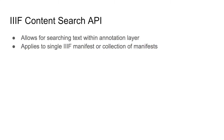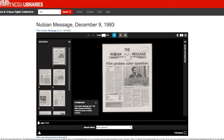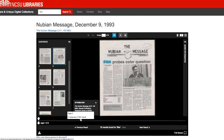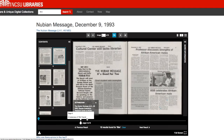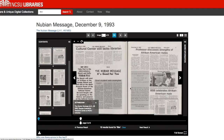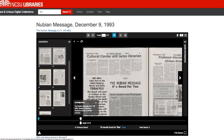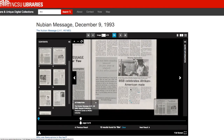The IIIF Content Search API allows for searching text within the annotation layer of a single IIIF resource, such as a manifest or collection — for example, searching a keyword within an issue or collection of issues of a newspaper.